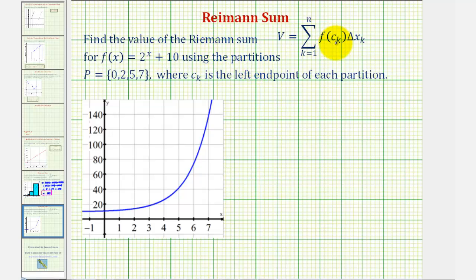We want to find the value of the Riemann sum given here for f(x) = 2^x + 10